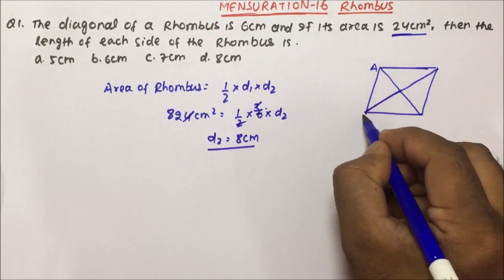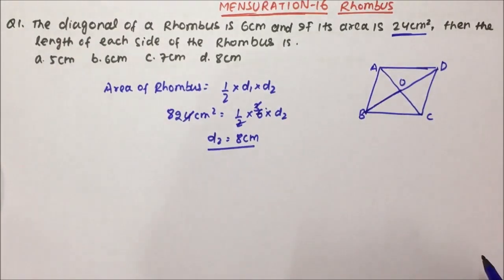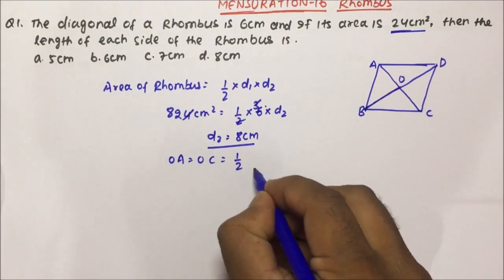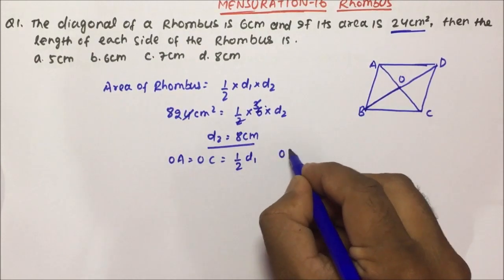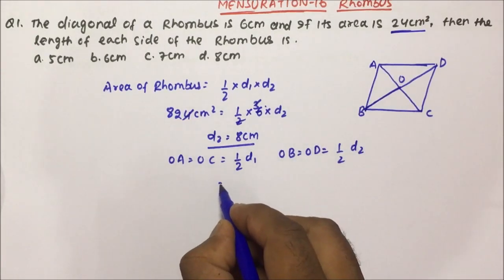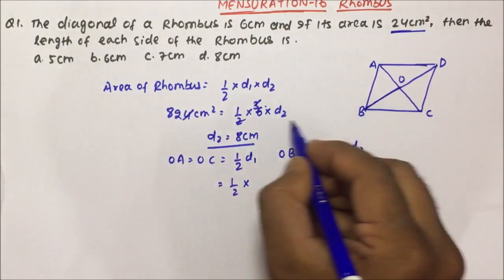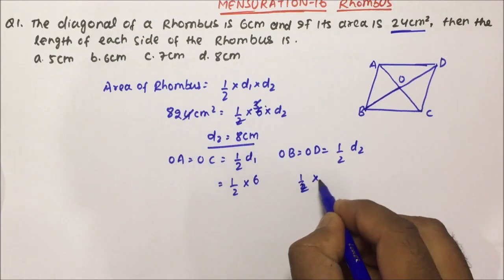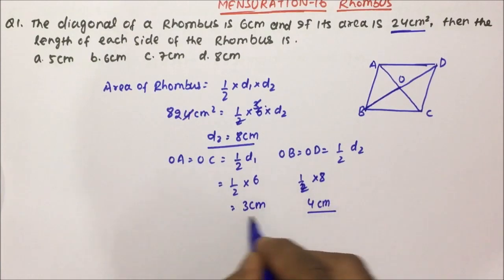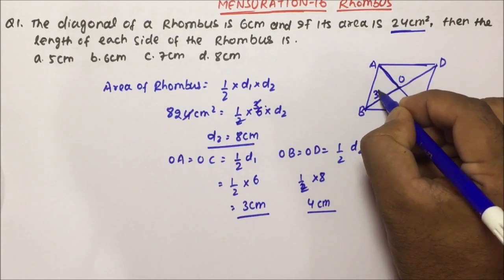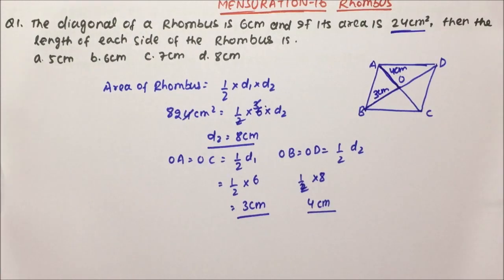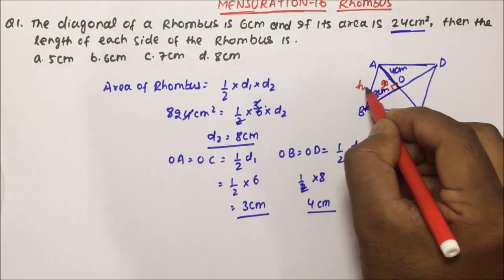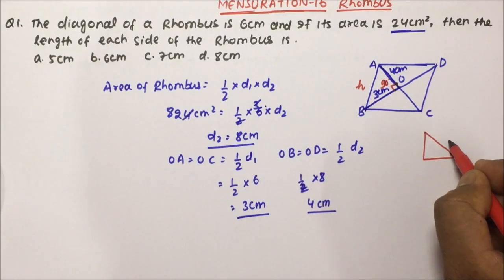Let us label the rhombus as A, B, C, D with centre O. Now, OA and OC are equal, each being 1/2 of one diagonal. OB and OD are equal, each being 1/2 of the other diagonal. So we can take one half-diagonal as 1/2 of 6 = 3 cm, and the other as 1/2 of 8 = 4 cm. Since the diagonals bisect each other, this angle at O will be 90 degrees, and the side of the rhombus acts as the hypotenuse.